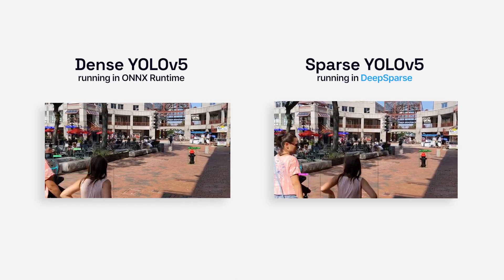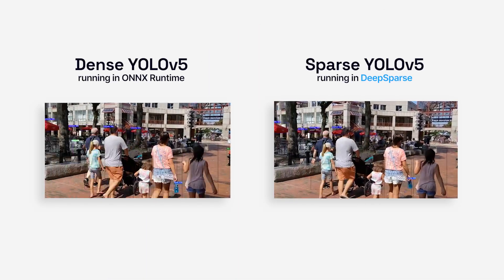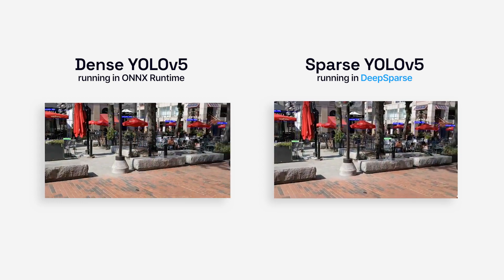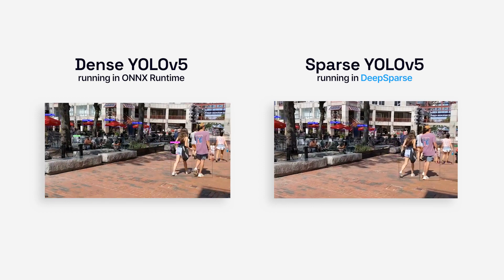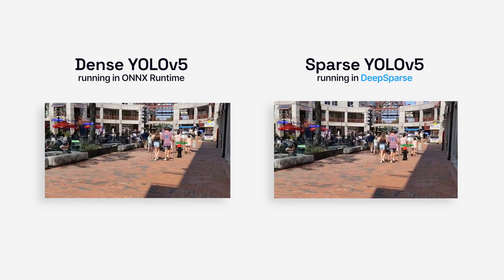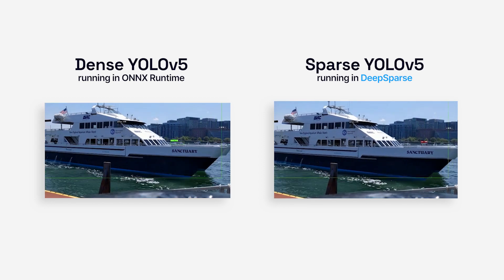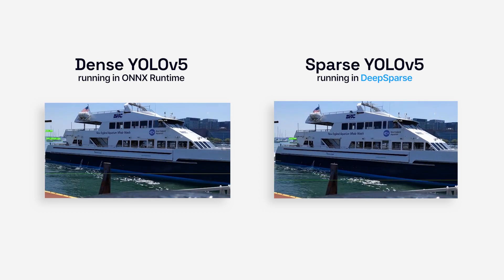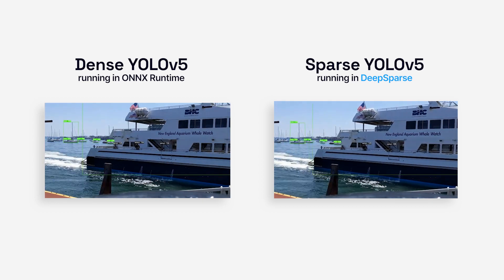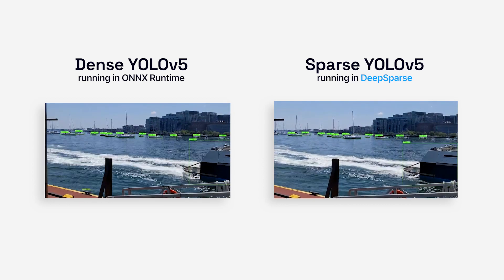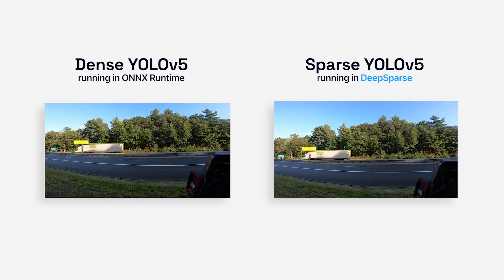Let's take a look at what this looks like. Here's a sample video being inferenced in two ways — both using the exact same model, in this case YOLO V5S, on the exact same piece of hardware. On the left is a fully dense version running on the standard ONNX runtime, and on the right is a fully sparsified version running on the DeepSparse engine. As you can see, the frame rate on the standard version is extremely choppy, whereas the DeepSparse version is running at a super high frame rate, almost imperceptible from real time. Typically you would need a GPU to get this type of performance.